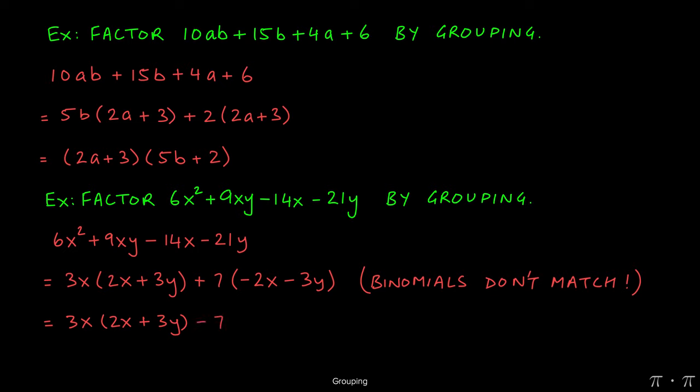If we factor out -7: -14x ÷ (-7) = +2x, and -21y ÷ (-7) = +3y. Two negatives divided give a positive. Now the binomials match, so we can factor out (2x + 3y). Dividing the first term by (2x + 3y) gives 3x, and dividing the second term gives -7. So the final answer is (2x + 3y)(3x - 7). That's it.